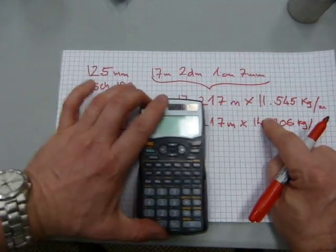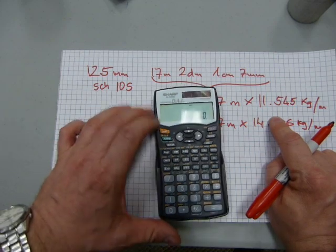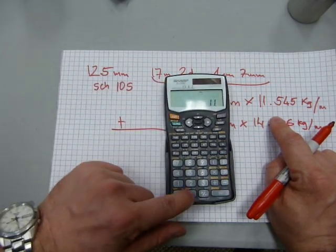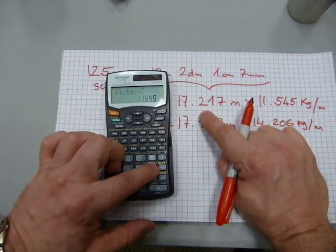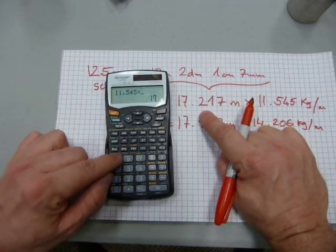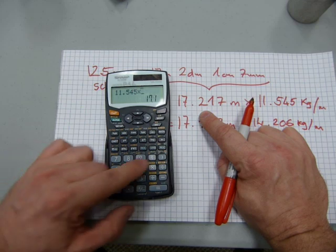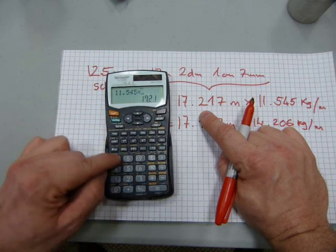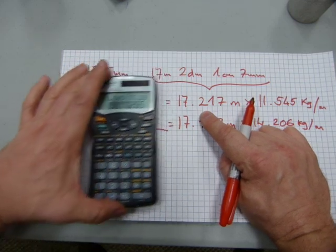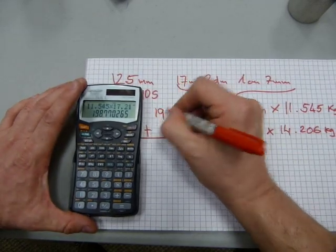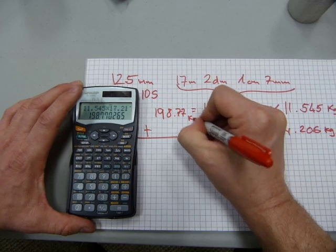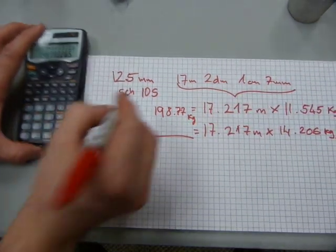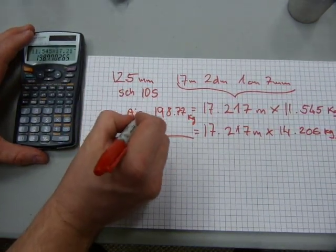So 11.545 is there. Times it by the length. 17.217 equals 198.77 kilograms. That's for the pipe alone. That's the pipe.